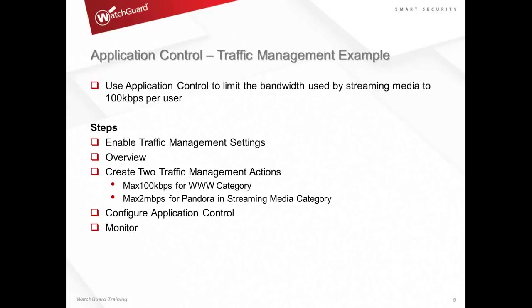Here's an example: using application control to limit the bandwidth used by streaming media to 100 kilobits per second per user. In today's environment that's not necessarily the most usable situation, so in my lab examples today we'll switch it up and lower it at the end so you can see how it works. The steps we're going to cover: enable traffic management settings in overall general settings, review the traffic management policy overview — controlling streaming media while still allowing web browsing — and configure two traffic management actions: a max of 100 kilobits per second for the World Wide Web category and a max of two megabits per second for Pandora in the streaming media category.